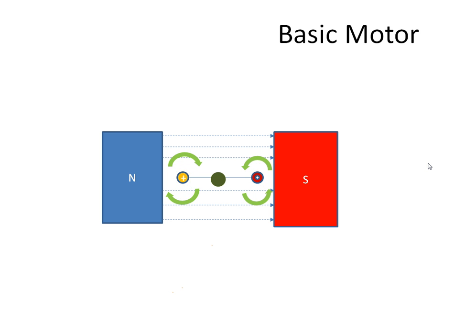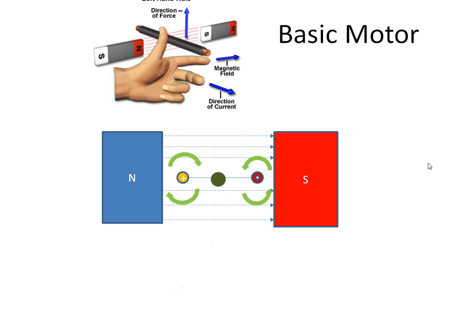Fleming's left hand rule for the motor tells us if we have a magnetic field, north to south, the index finger points in the direction of the magnetic field. The middle finger is the direction of the current, and then our thumb will give us the direction of the force.